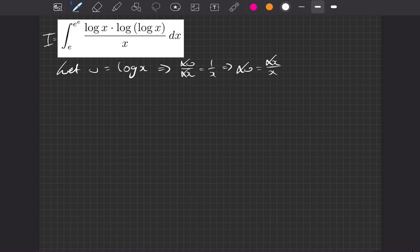So let's look at our limits. If x is equal to e, then that tells us that u is equal to the log of e. In this case we're taking the base to be the natural log, so the natural log of e is going to be just 1. Then u is going to be log of e to the e, which is e log e, which is just equal to e.